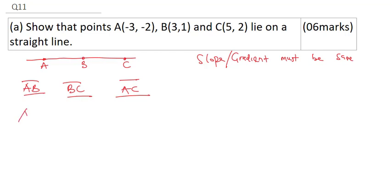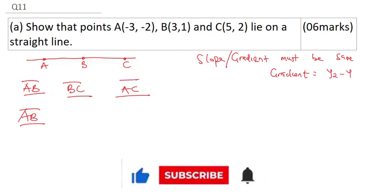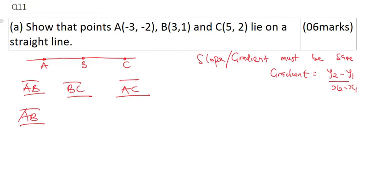Now, line A, B, to calculate the gradient, you need to recall that your formula for gradient is that Y2 minus Y1 over X2 minus X1. Now, considering points A and B, it's going to be our Y2, it's 1, that's 1 minus minus 2, all over, this will be 3 minus minus 3.